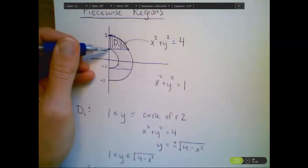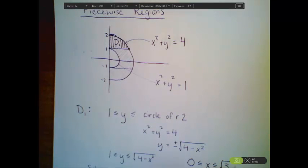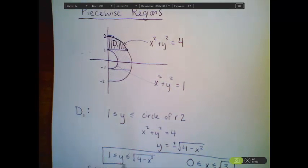Visually we can see that x starts at 0, because that's where the region begins. 0 is less than or equal to x is less than or equal to square root of 3. And those are the bounds for my D1 when I write it as a type 1 region.